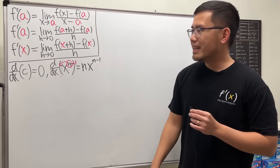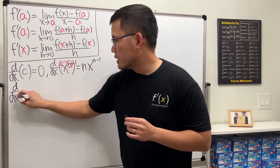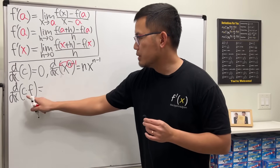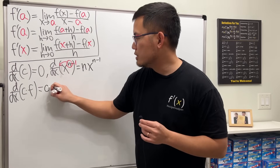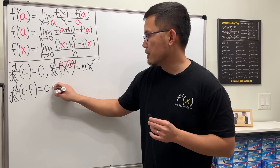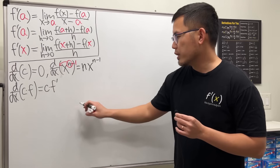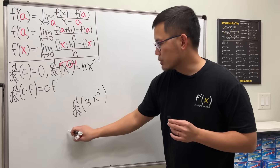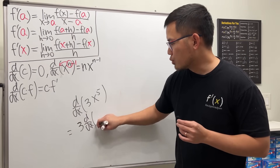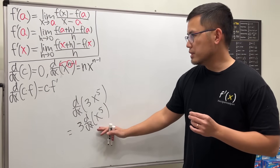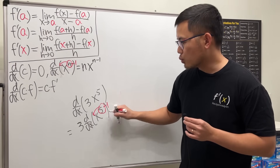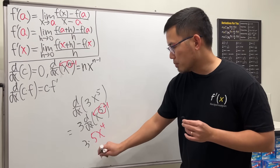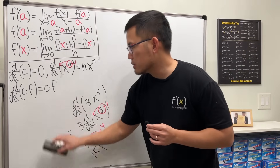If we have a constant multiple with a function, c times f(x), you put the constant c on the outside and multiply by the derivative of f, giving c times f prime. For example, the derivative of 3x to the fifth: put the 3 on the outside, then use the power rule on x to the fifth — bring the 5 to the front and subtract 1 — giving 3 times 5x to the fourth, which equals 15x to the fourth.